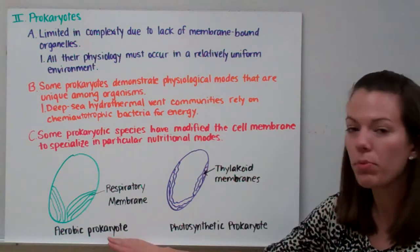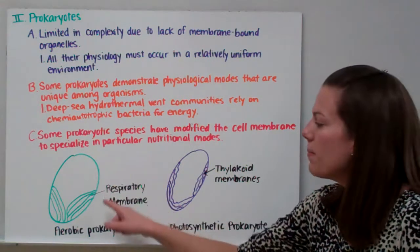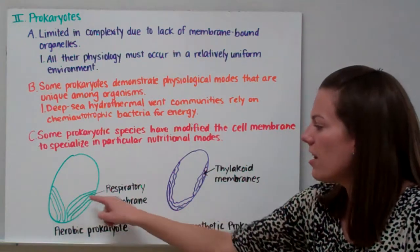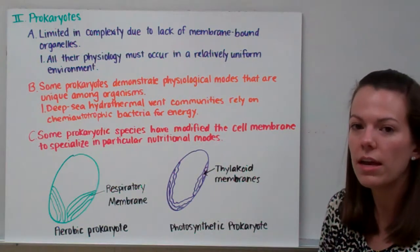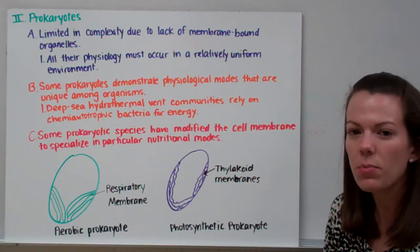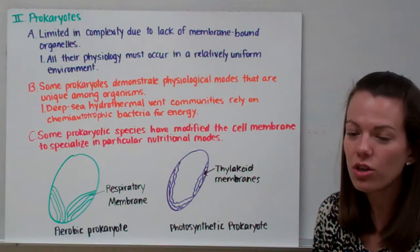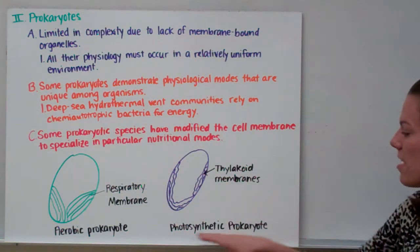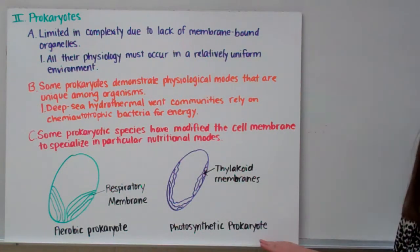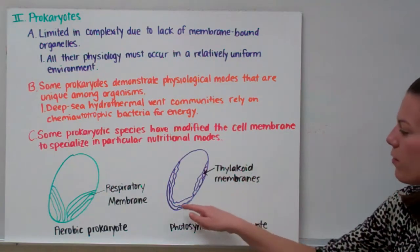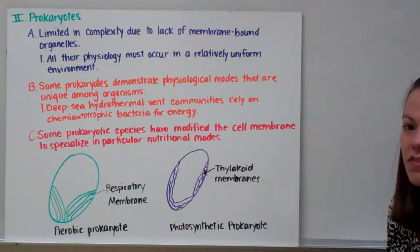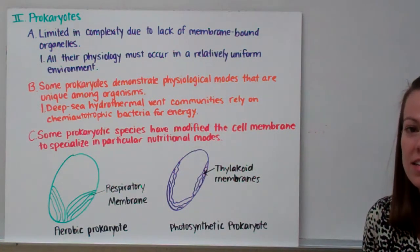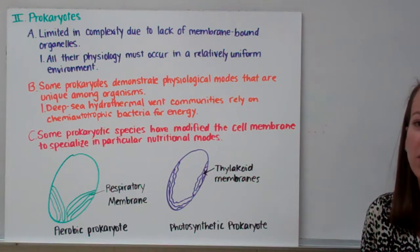This aerobic prokaryote has a cell membrane that has been folded in and out, forming a respiratory membrane — somewhat like a mitochondrion, but it's actually the cell membrane doing this. This photosynthetic prokaryote has infoldings on its surface that are similar to thylakoid membranes, and it is able to carry out photosynthesis.